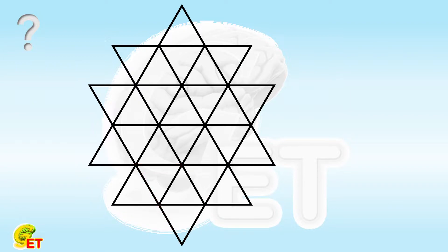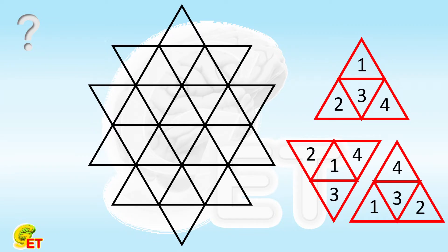We try to put the 4 numbers 1, 2, 3, and 4 into each small triangle. And the 4 numbers in each larger triangle composed of 4 small triangles cannot be duplicated.